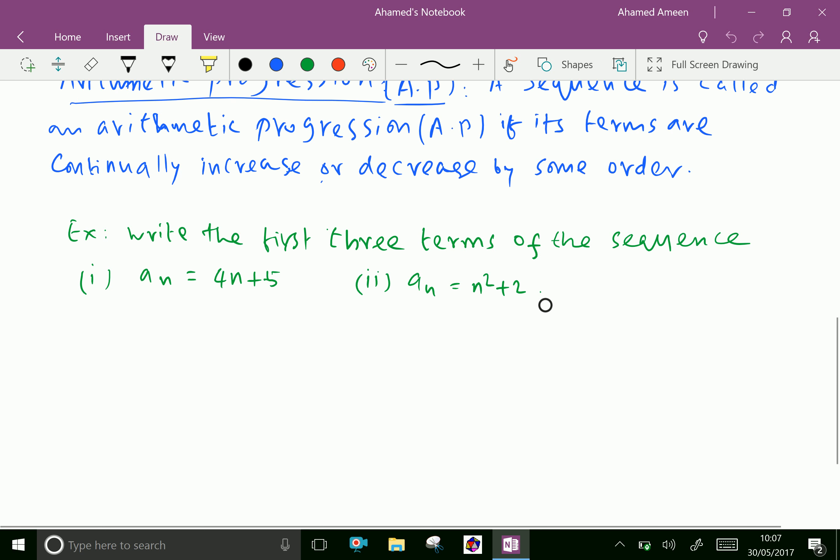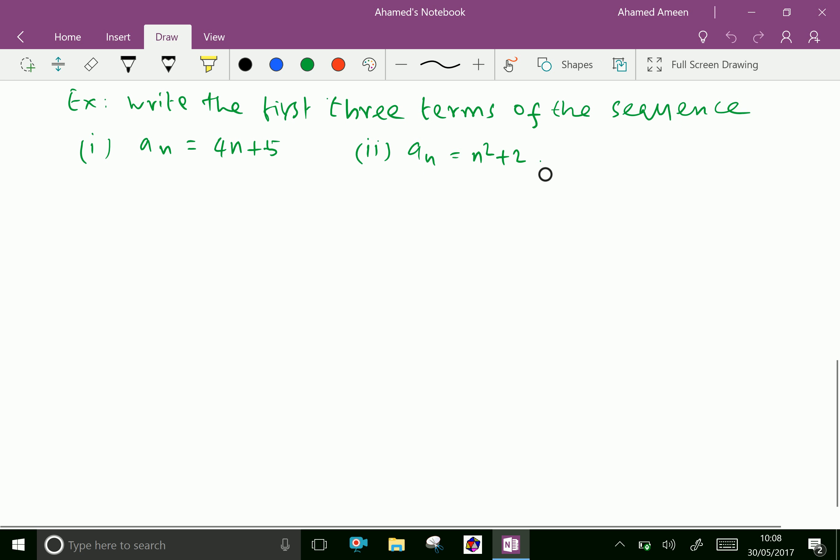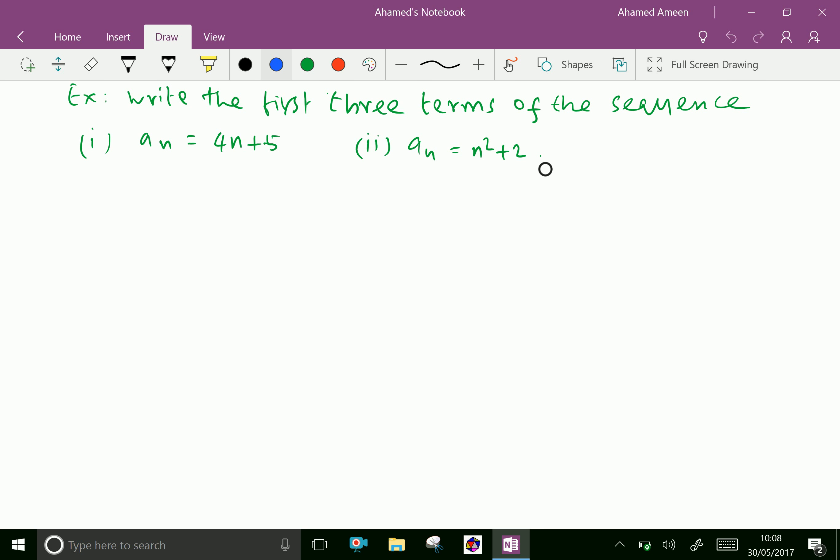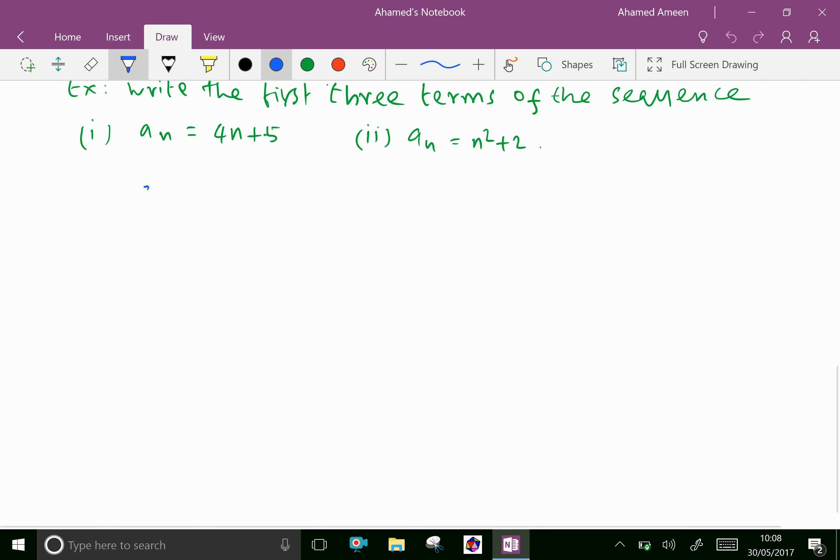Example. Write the first three terms of the sequence a_n equal 4n plus 5 and second one a_n equal n squared plus 2. Let us do first one. The sequence is given as a_n equal 4n plus 5.